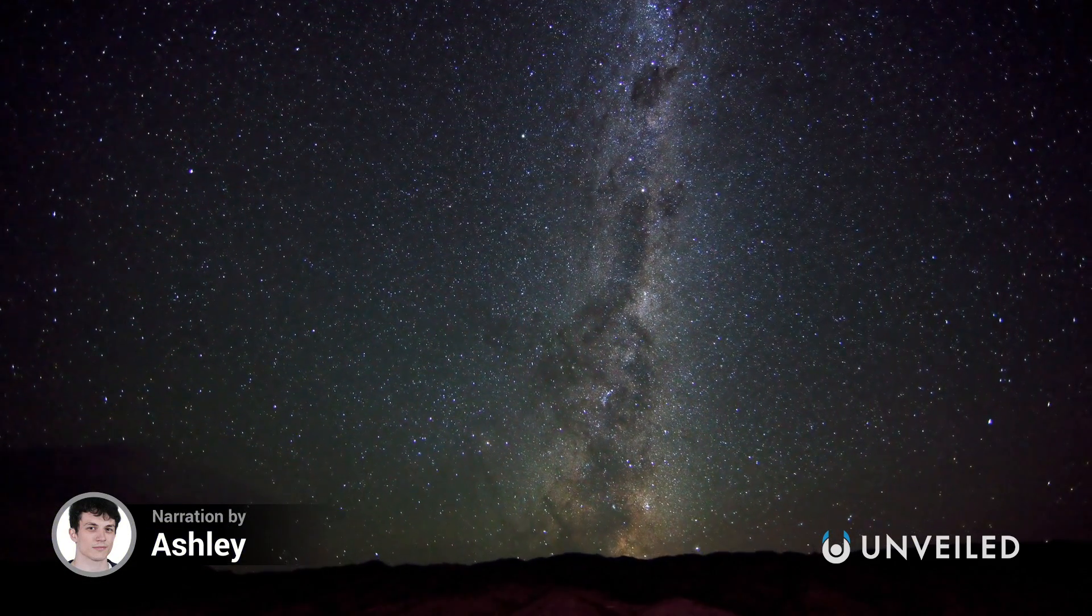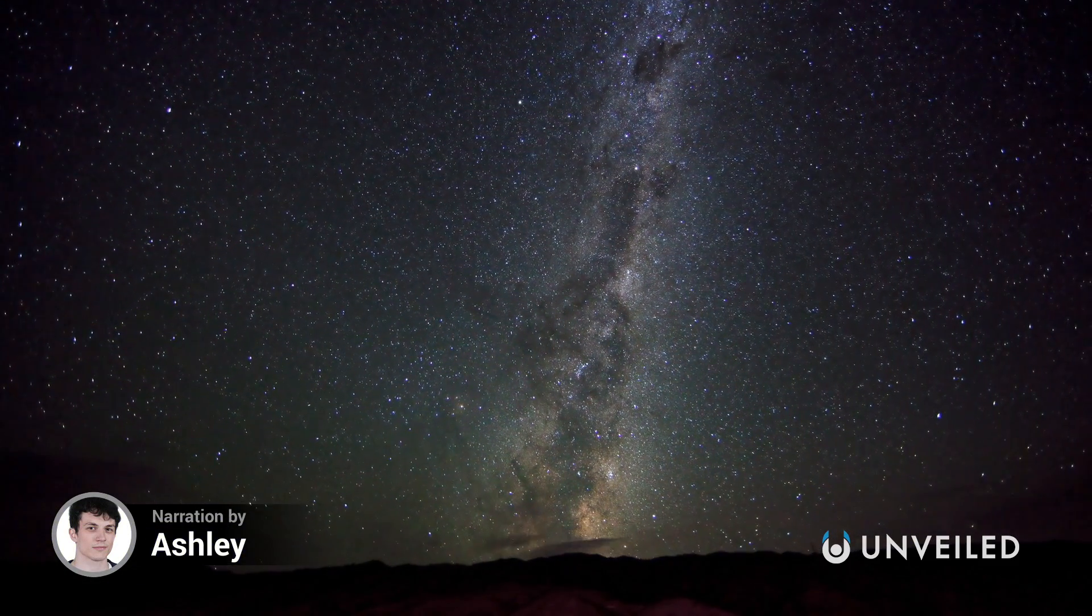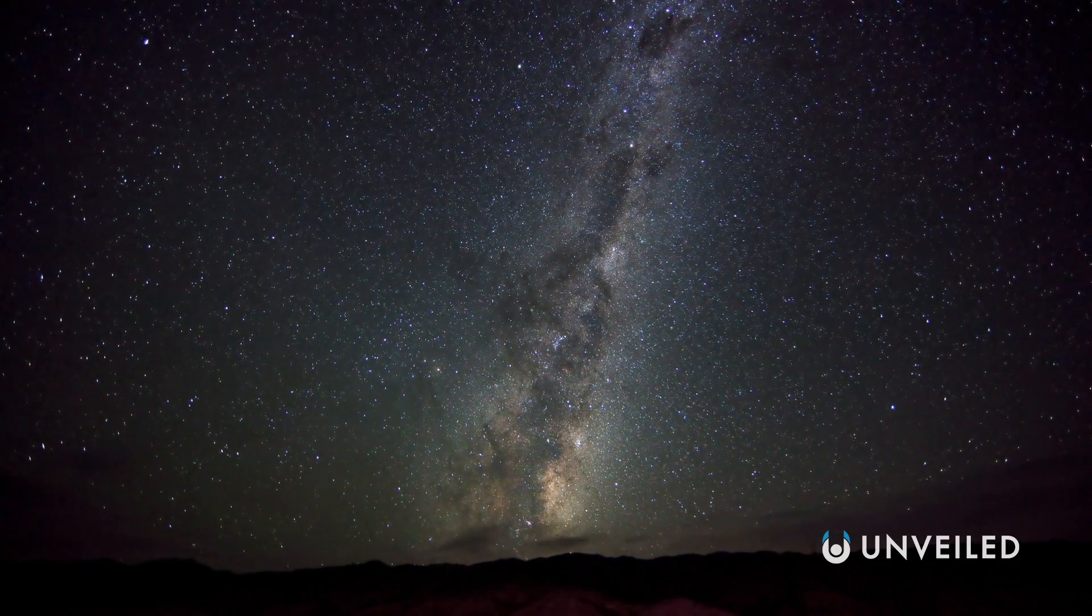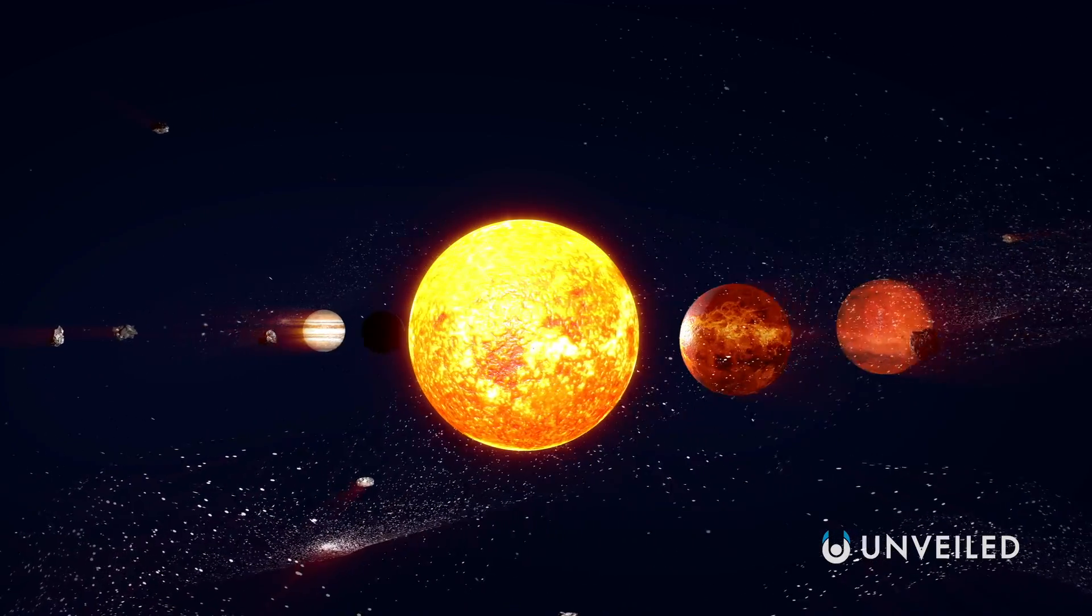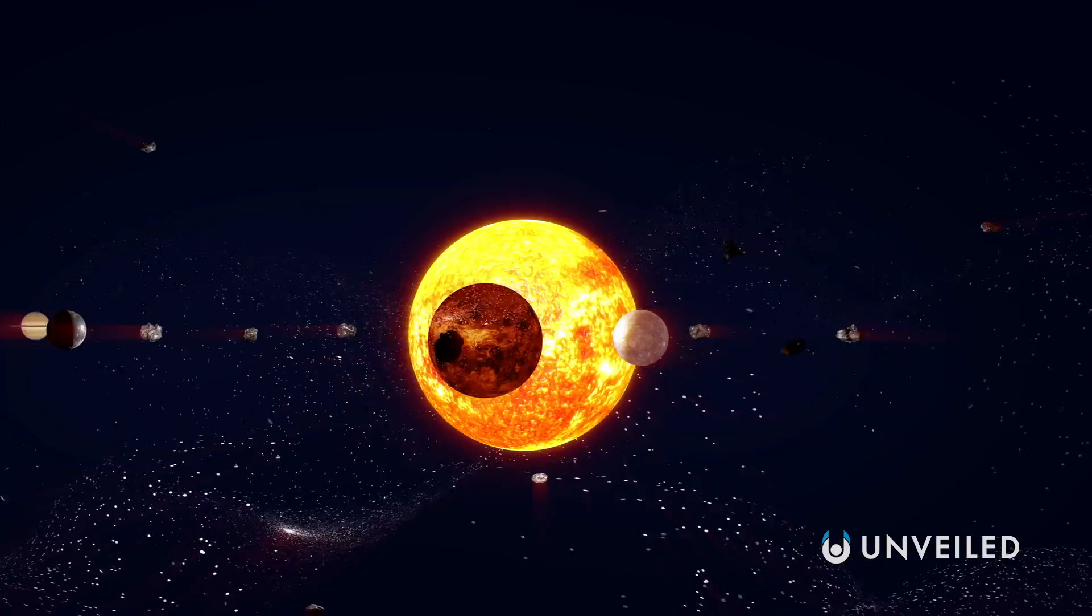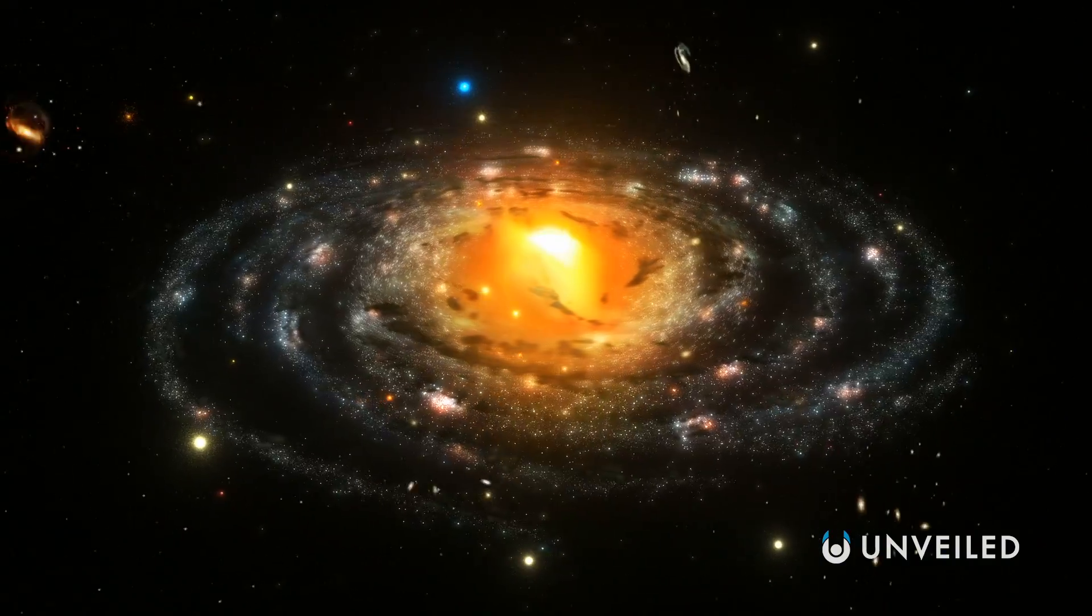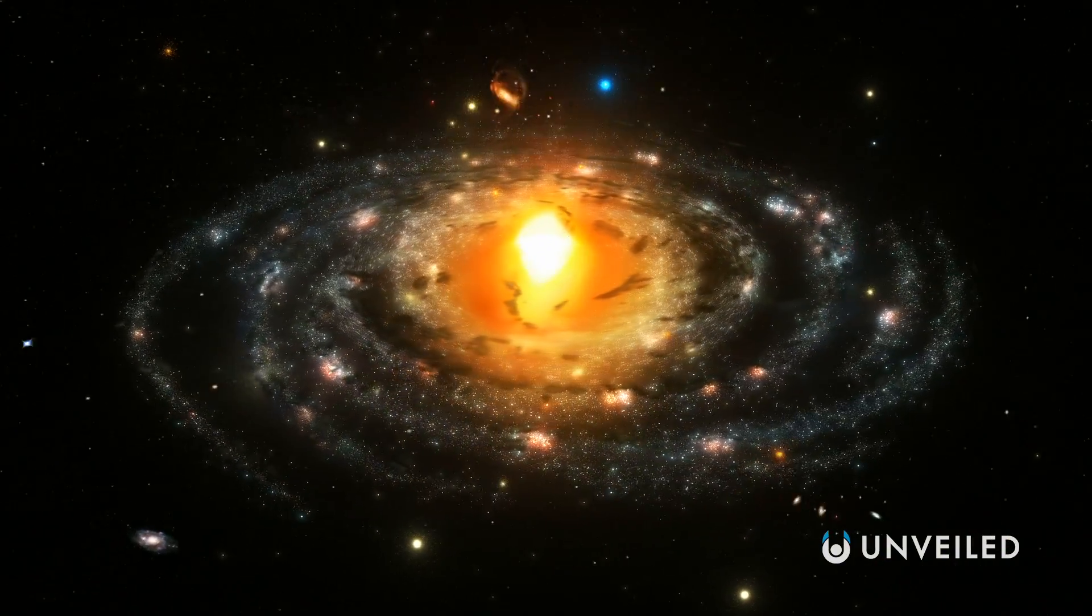When we look up at the night sky, we generally see two recurring shapes. Stars, planets, moons, and many asteroids are spherical in nature, while solar systems, galaxies, and even black holes tend to be flattened disks.